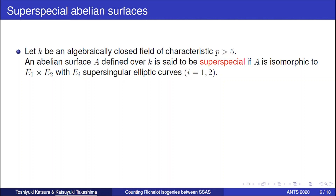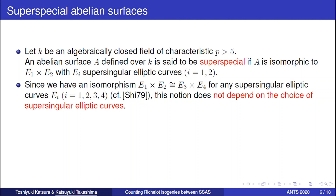I will define super-special abelian surfaces. Let k be an algebraically closed field of positive characteristic p, where p is greater than 5. An abelian surface A is said to be super-special if A is isomorphic to a product of two super-singular elliptic curves E1 times E2. Interestingly, in the higher-genus case, we have an isomorphism for any super-singular elliptic curves E1, E2, E3, E4. So this notion of super-speciality does not depend on the choice of super-singular elliptic curves.